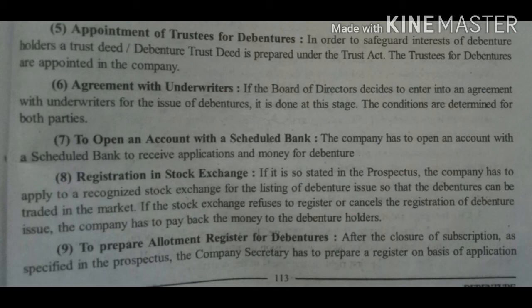Seventh is to open an account with a scheduled bank: an account is opened at the scheduled bank to receive applications and money for debentures. Eighth is registration in stock exchange: if it is so stated in the prospectus, the company has to apply to a recognized stock exchange so that the listing of debentures can be done and the debentures can be traded in the market. If the exchange refuses to register or cancels the registration of the debenture issue, the company has to pay back the money to the debenture holders.